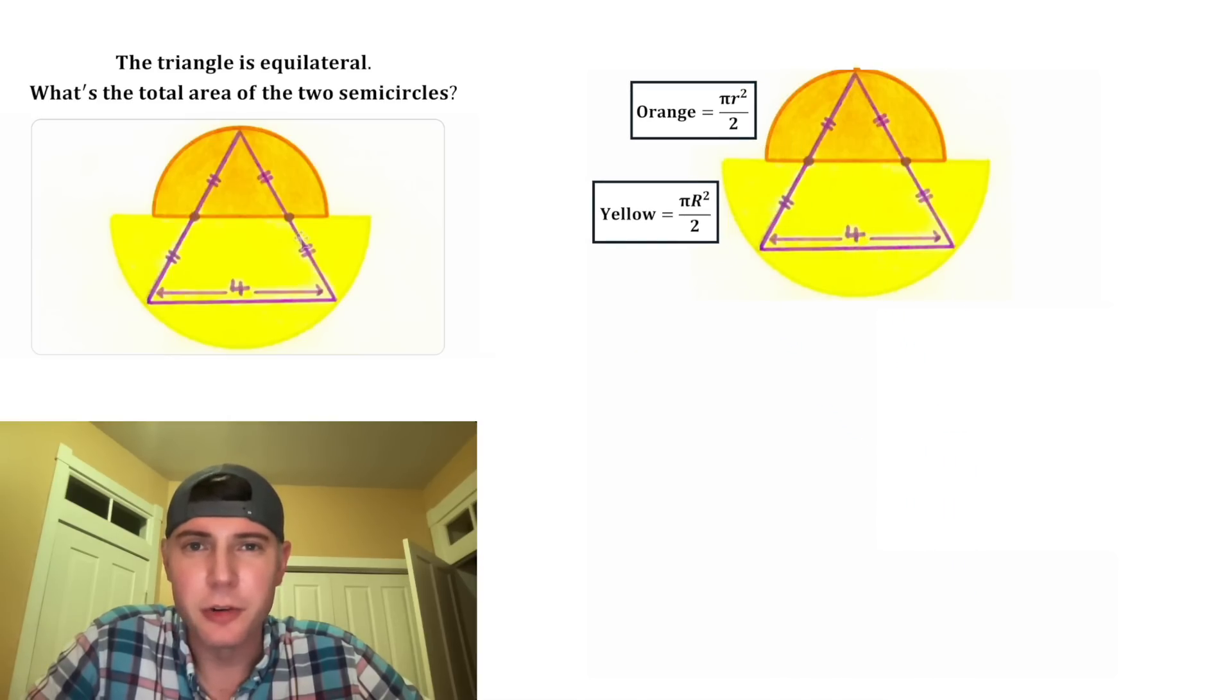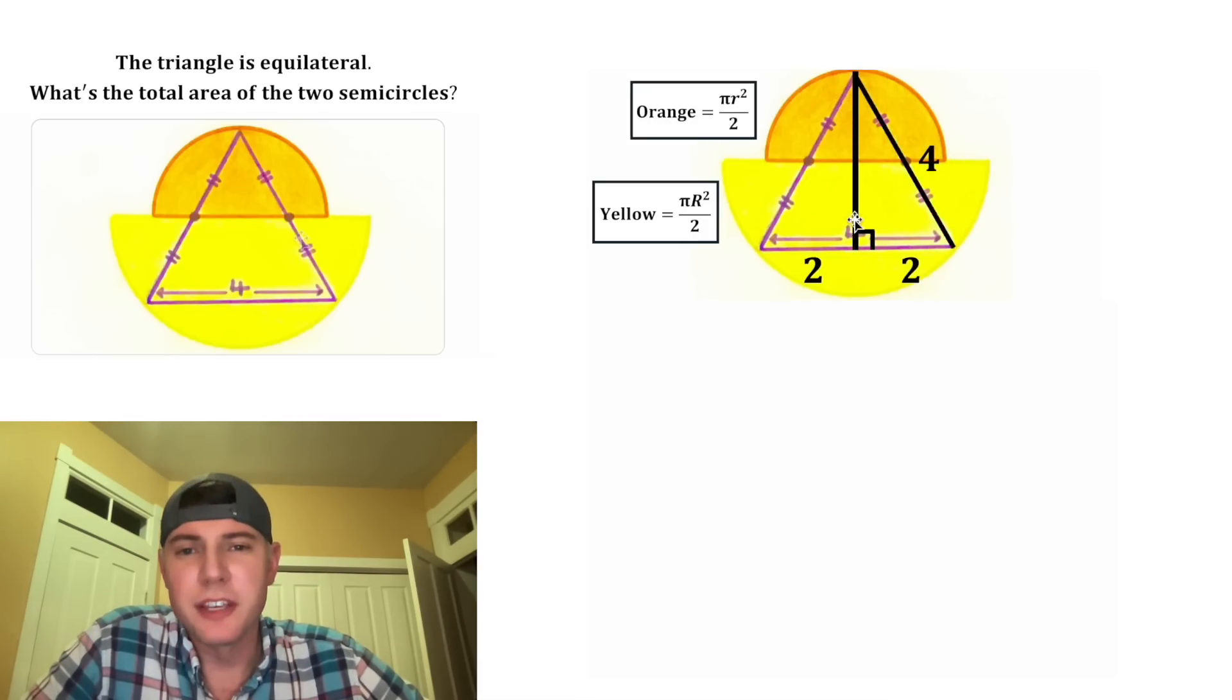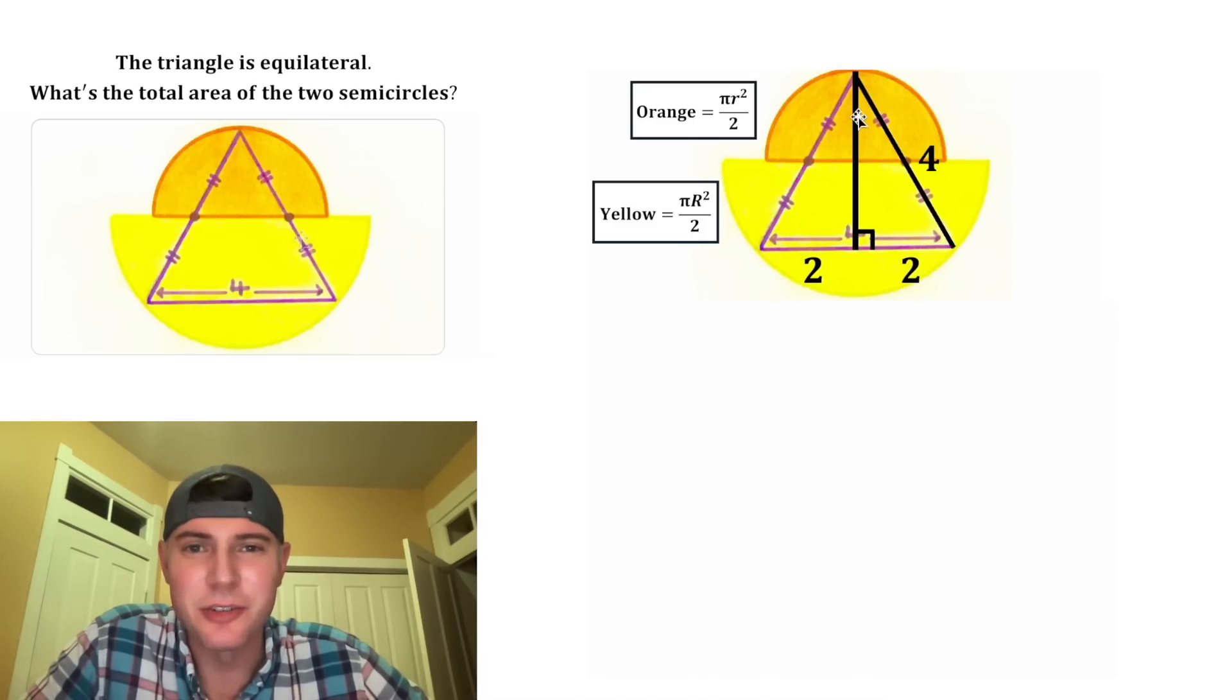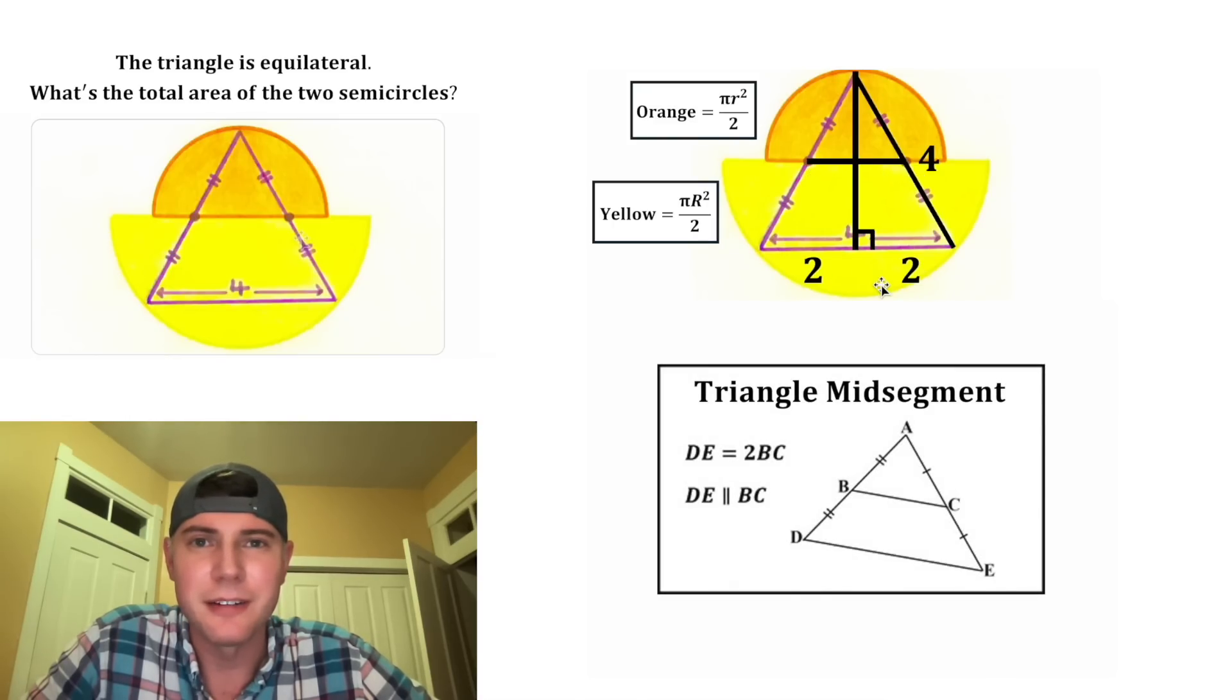Next we want to create a right triangle, because that way we can use the Pythagorean theorem, and that usually opens things up. From this vertex, let's drop an altitude. In every equilateral triangle, the altitude is the same thing as the perpendicular bisector. That means we've cut this base in half, and each of these halves are equal to 2. The base is 4, so these sides will also be 4. If we connect these two midpoints, that'll give us the mid-segment of this triangle, which is always parallel to the base.